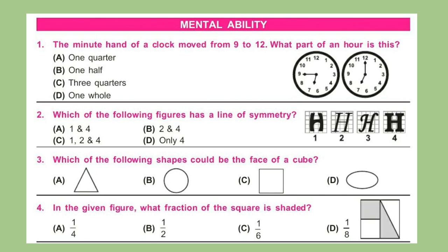Let's start from the first section: Mental Ability. Question 1: The minute hand of a clock moved from 9 to 12. What part of an hour is this? Options are given here. Question 2: Which of the following figures has a line of symmetry? Question 3: Which of the following shapes could be the face of a cube?